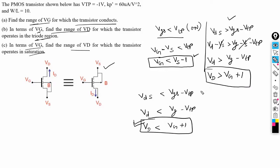For the saturation region, we can also use the equal to sign. So the condition becomes VD less than or equal to VG plus 1. For this condition, the transistor will be biased in the saturation region.